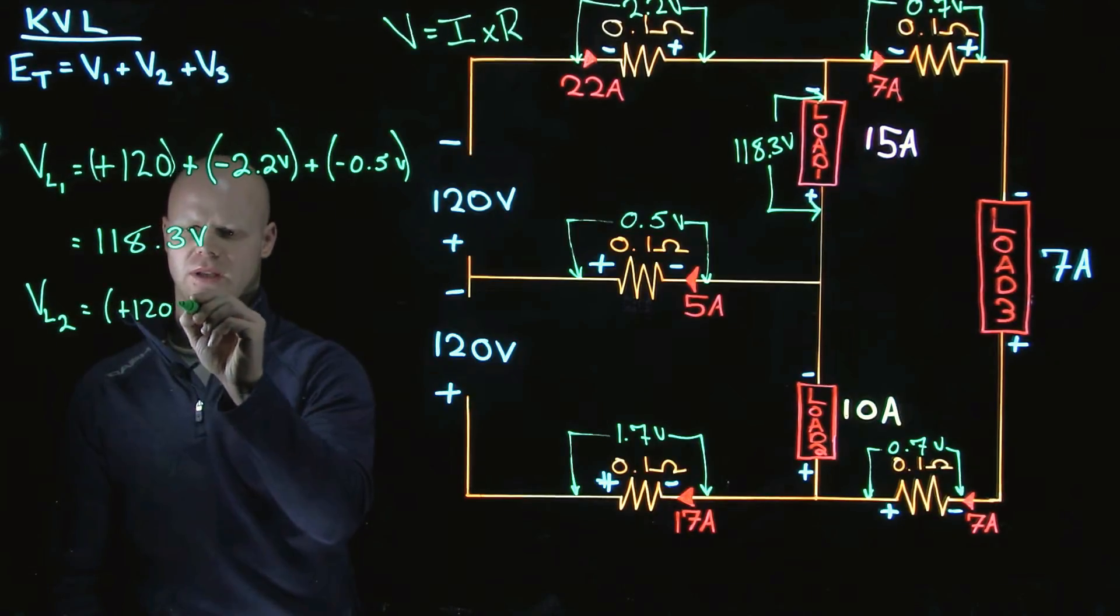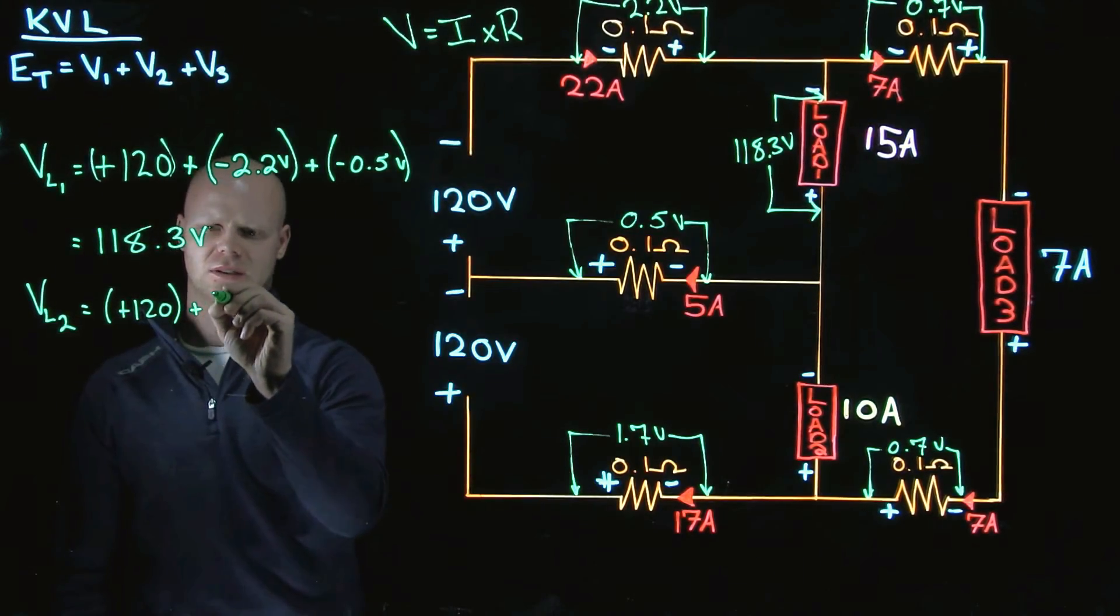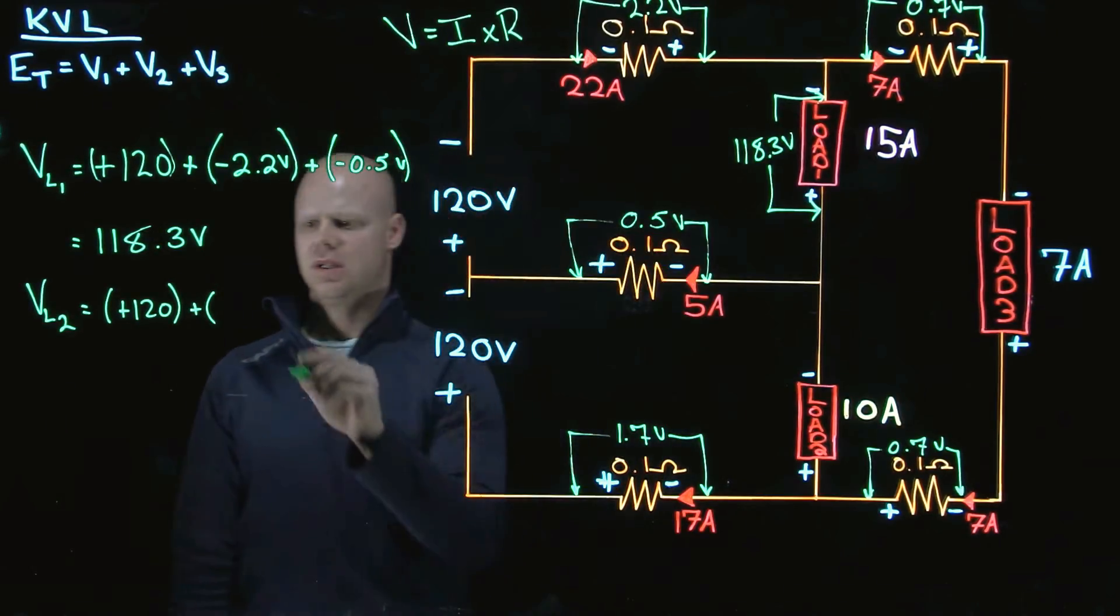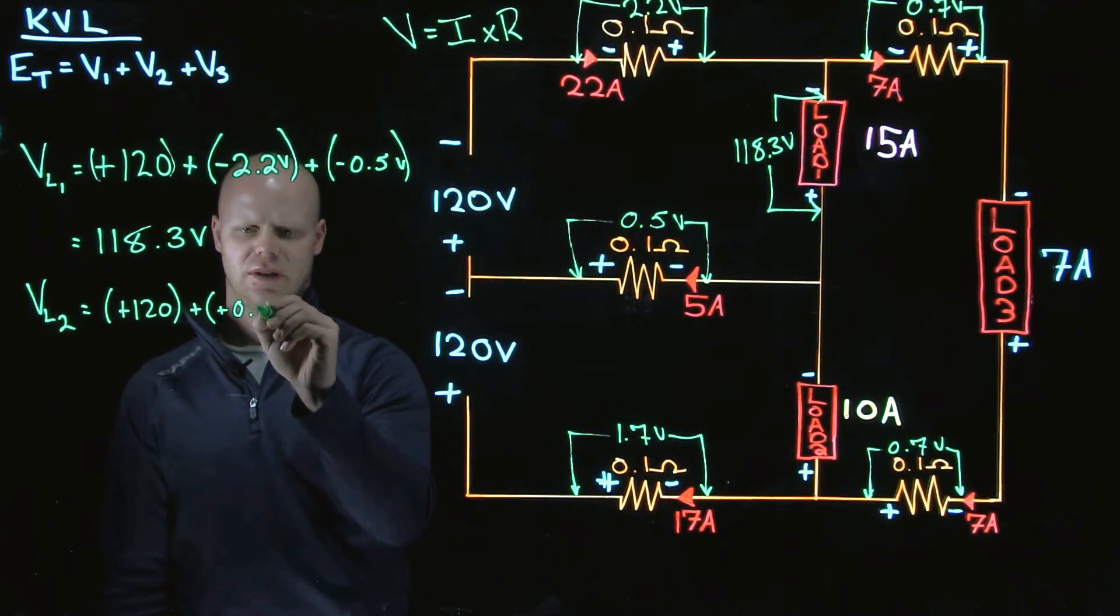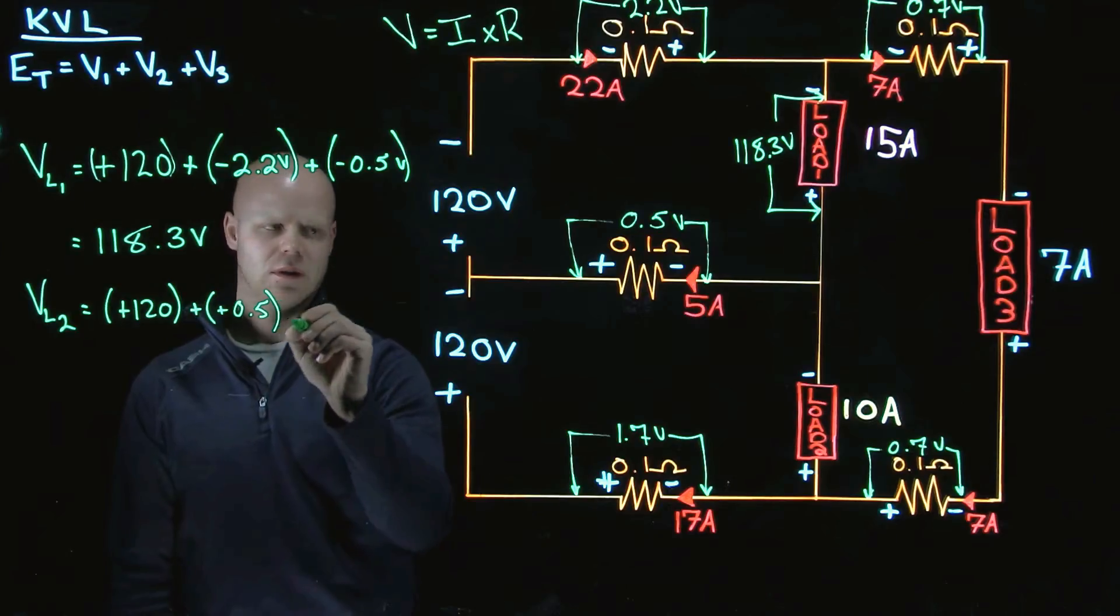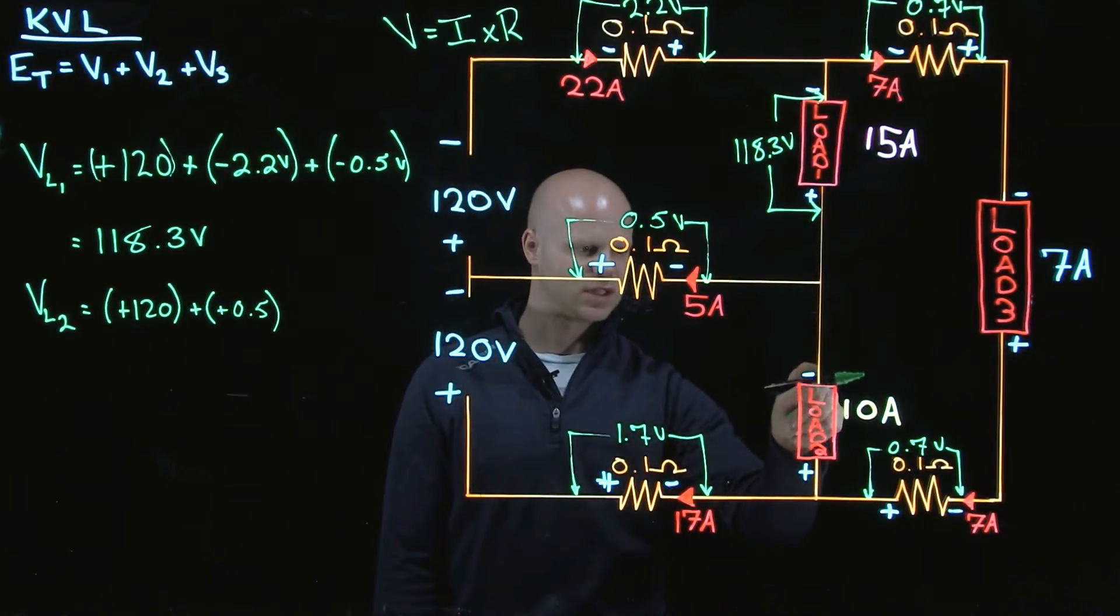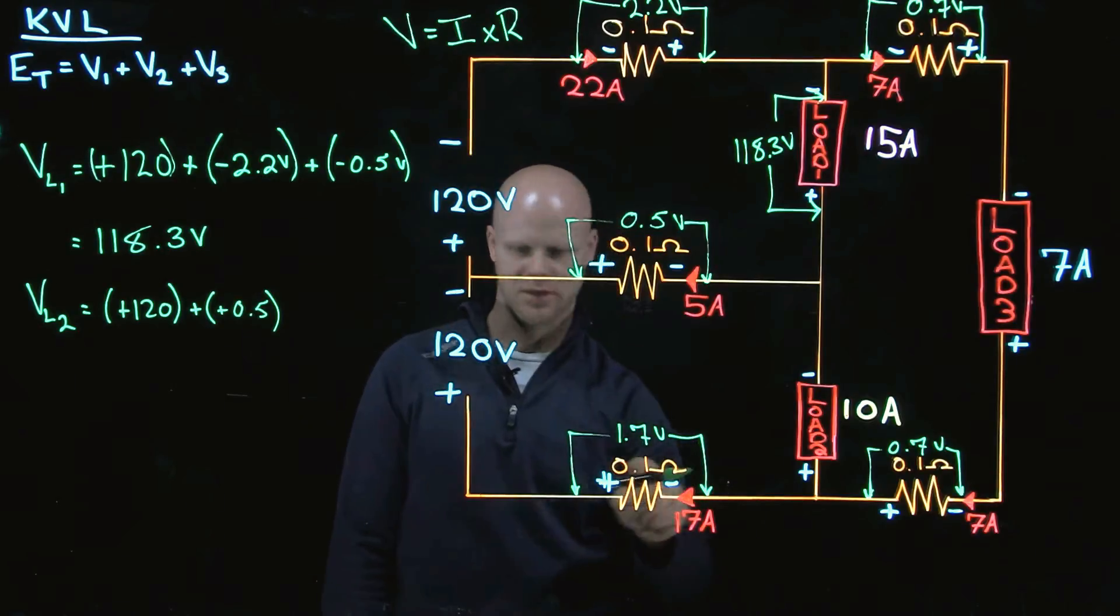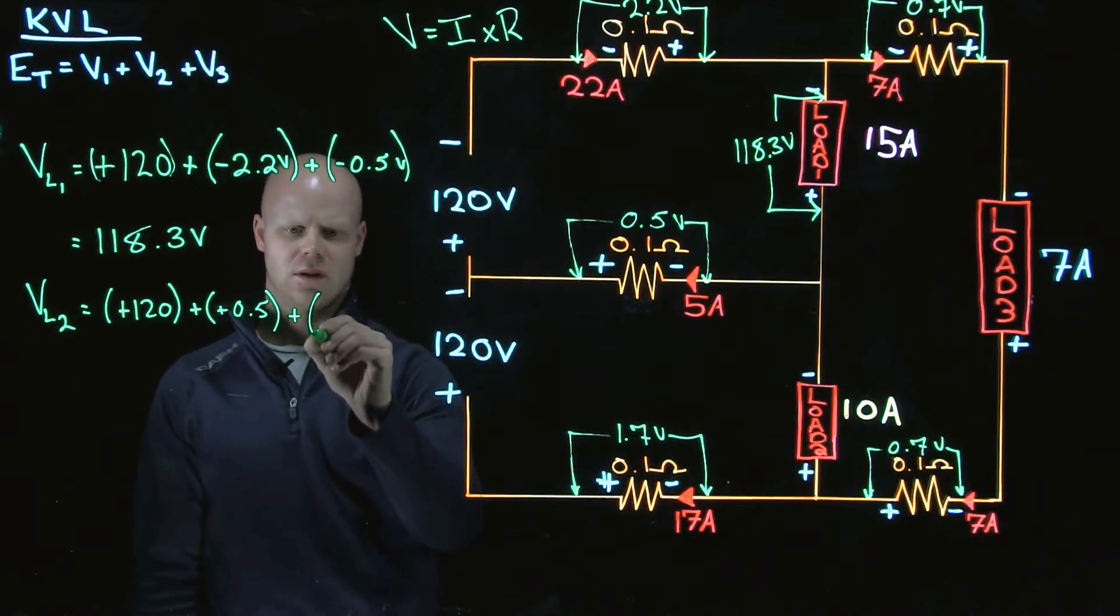So positive 120 plus, now it's a positive 0.5. We are unsure of this, this is what we are solving for. So we are plus a negative 1.7.